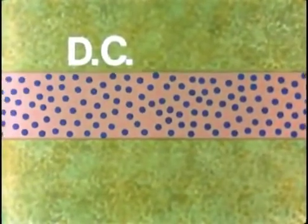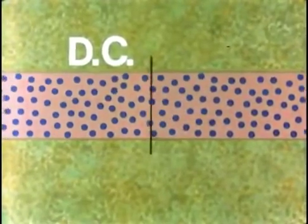Alternating current, like direct current, is measured in amps, but with a difference. Let's see what the difference is. Take one amp DC. When one amp flows, a known very large number of electrons passes a point in one second.